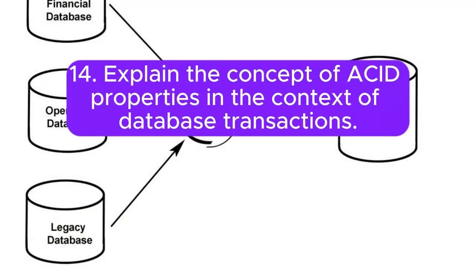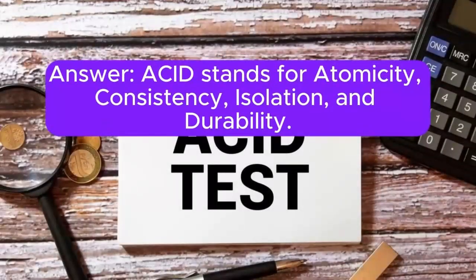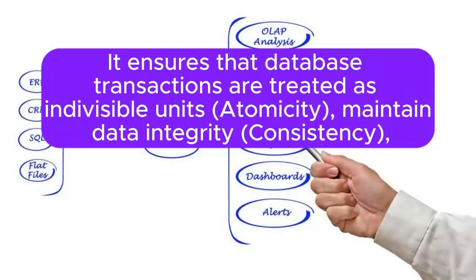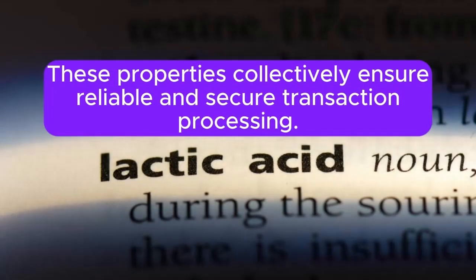Question 14: Explain the concept of ACID properties in the context of database transactions. Answer: ACID stands for Atomicity, Consistency, Isolation, and Durability. It ensures that database transactions are treated as indivisible units. Atomicity maintains data integrity, Consistency ensures data validity, Isolation ensures transactions execute independently, and Durability ensures data persists even after system failures. These properties collectively ensure reliable and secure transaction processing.